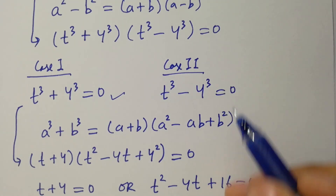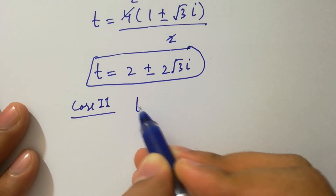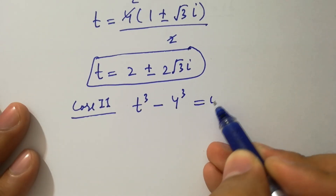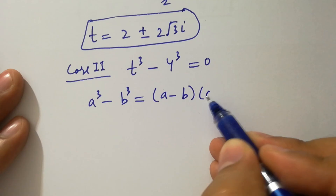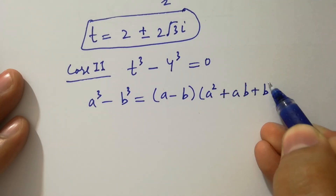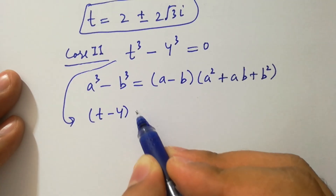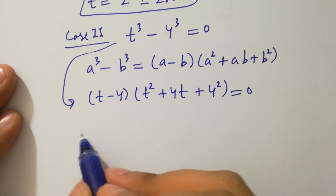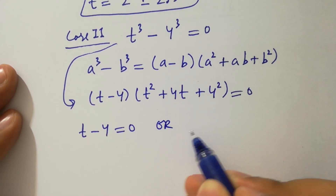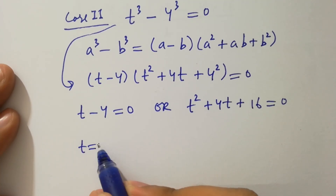Now take case two: t cubed minus 4 cubed equals 0. Applying the formula a cubed minus b cubed equals a minus b times a squared plus ab plus b squared, we get t minus 4, times t squared plus 4t plus 16, equals 0. Either t minus 4 equals 0, giving t squared plus 4t plus 16 equals 0, and we get the value t equals 4.